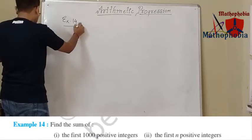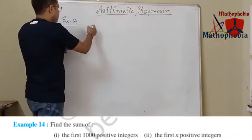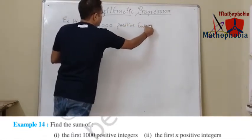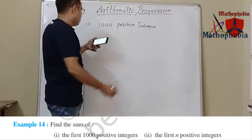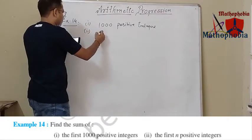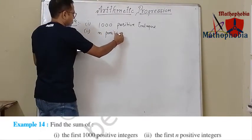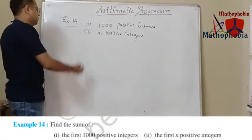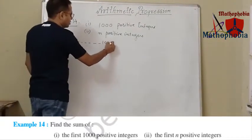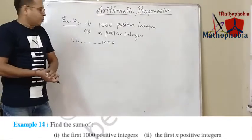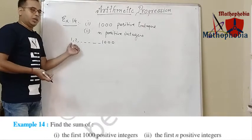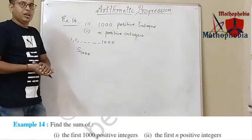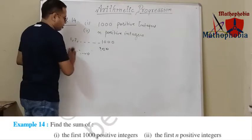Example number 14: find the sum of the first 1000 positive integers, and also find the sum of the first n positive integers. Positive integers start from 1 up to 1000. The value of a is 1, the common difference is also 1, and we need to find the sum of 1000 terms. Applying the formula Sn equals n upon 2 times 2a plus n minus 1 into d.